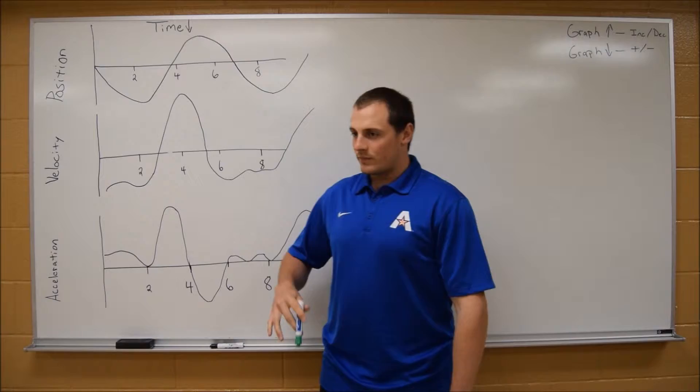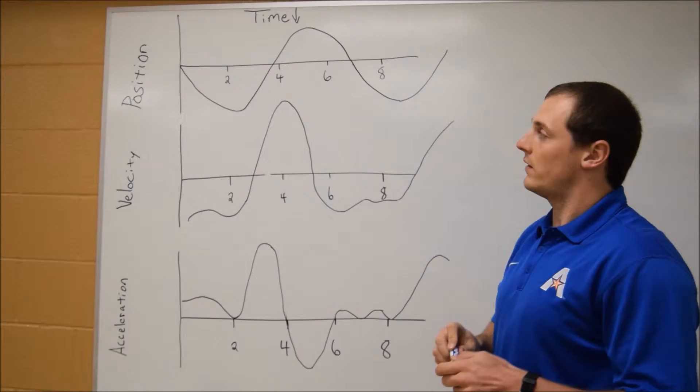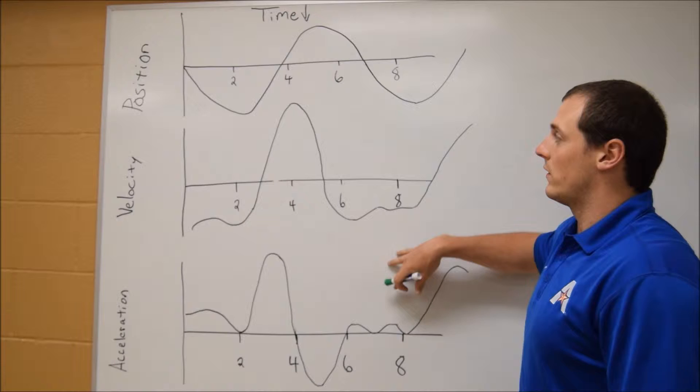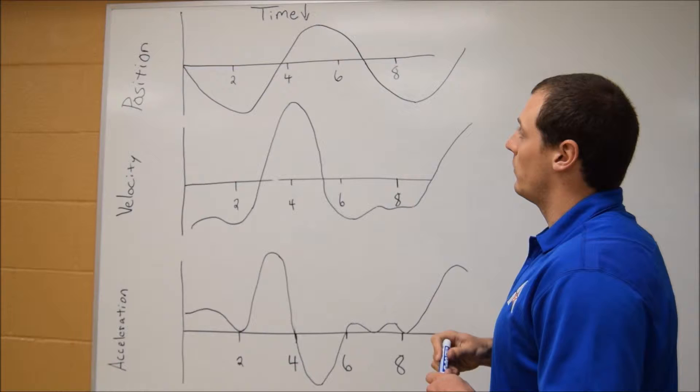The most important thing when looking at these is they need to be in order: position on top, velocity, and then acceleration. That comes from calculus derivatives, but since we're not doing anything with calculus, you don't need to worry about that specifically. Just know that they need to be in this order. What we're looking at here is some object's position along a course of time, and then its velocity and acceleration are also coincident with that.